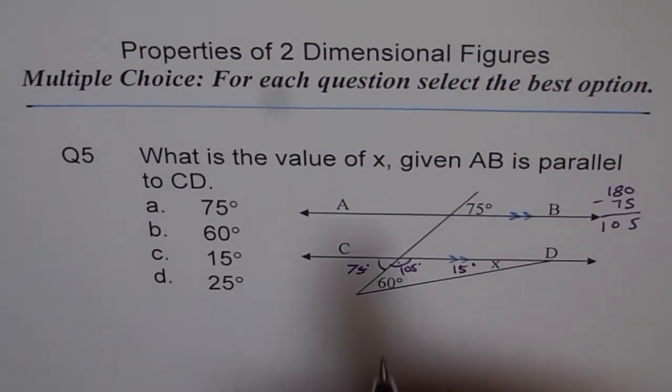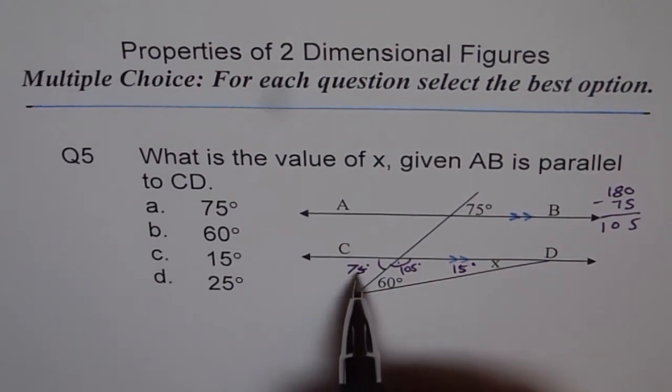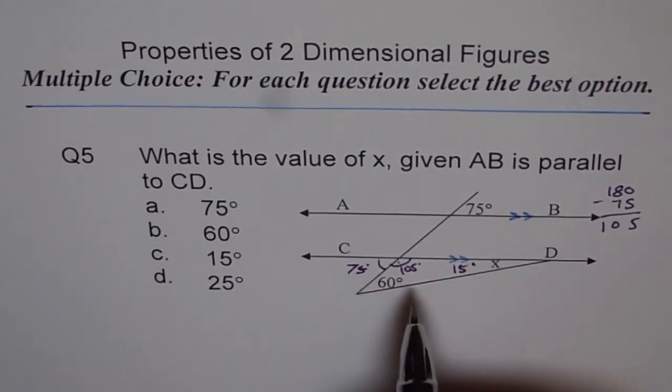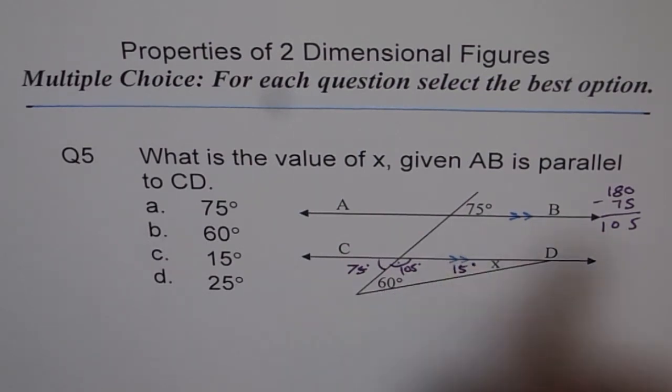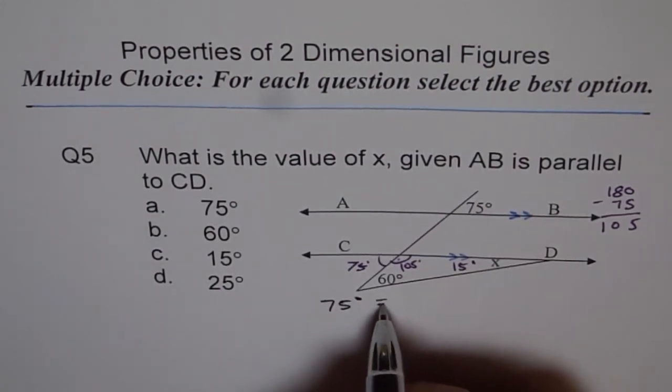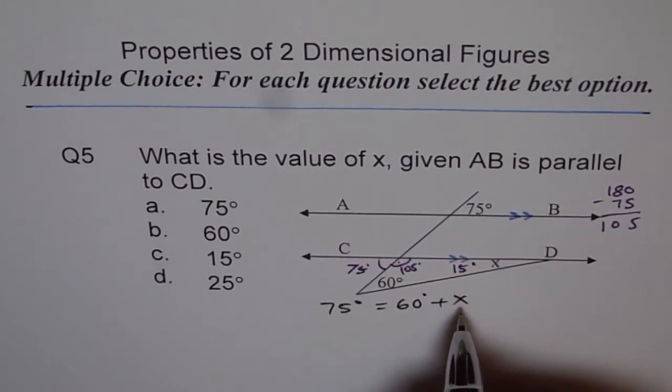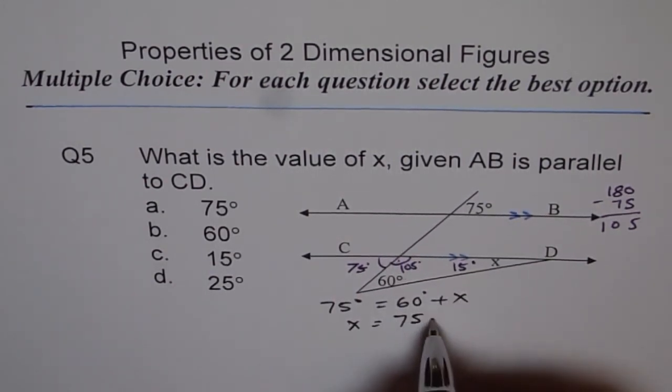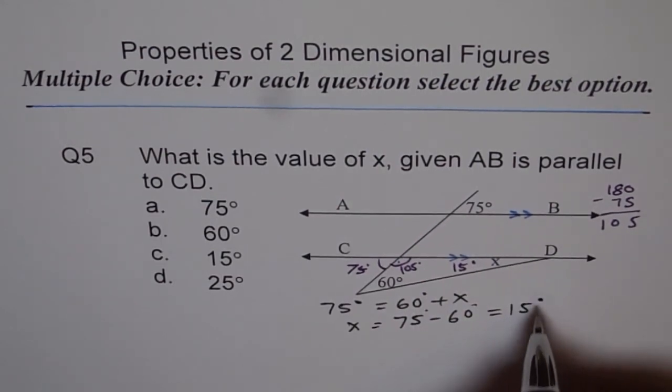The other way to solve is that the exterior angle, which you saw in our calculation, exterior angle is equal to sum of interior angles, the other two interior angles. Therefore, we could have done it like this also. That 75 degrees is equal to 60 plus X. And therefore, X is equal to 75 minus 60 degrees. That is 15 degrees.